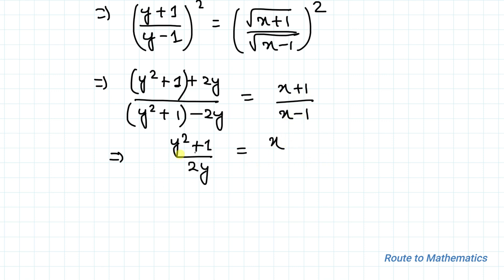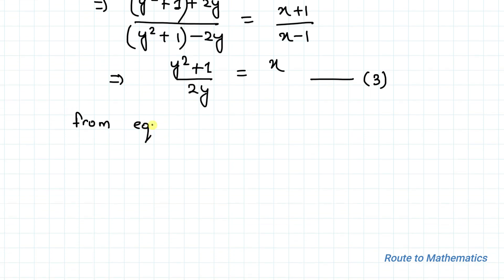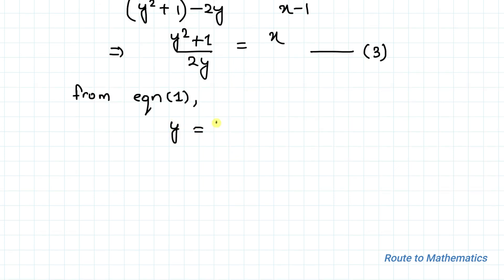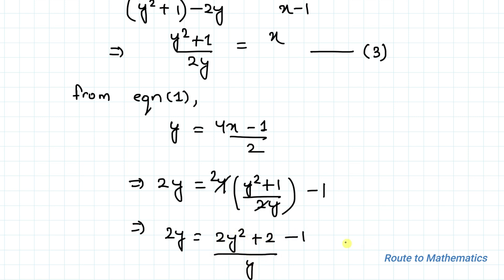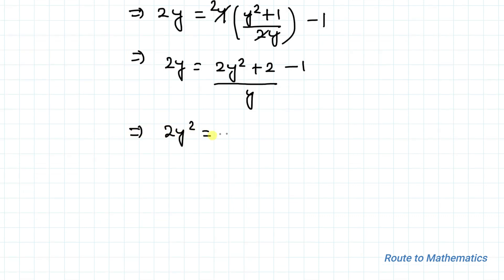From equation 3 we have x = (y² + 1) / (2y). We also have y = (4x − 1) / 2 from equation 1. Substituting, we get 2y² = 2y² + 2 − y, so the 2y² terms cancel out, and we find y = 2.